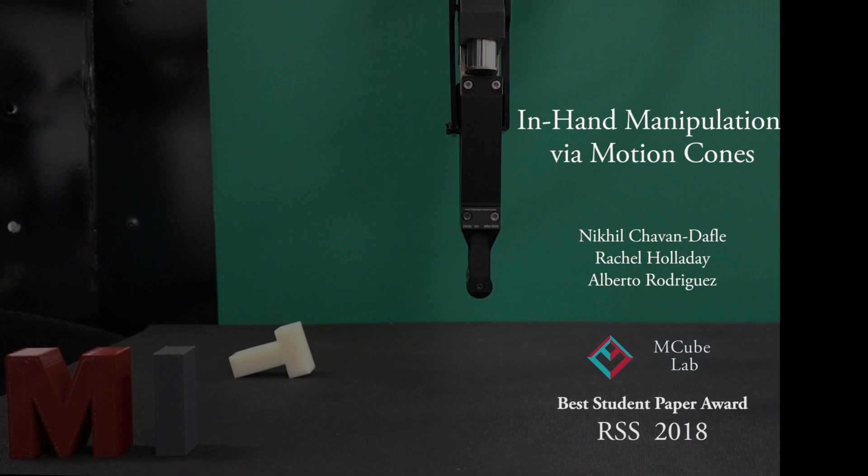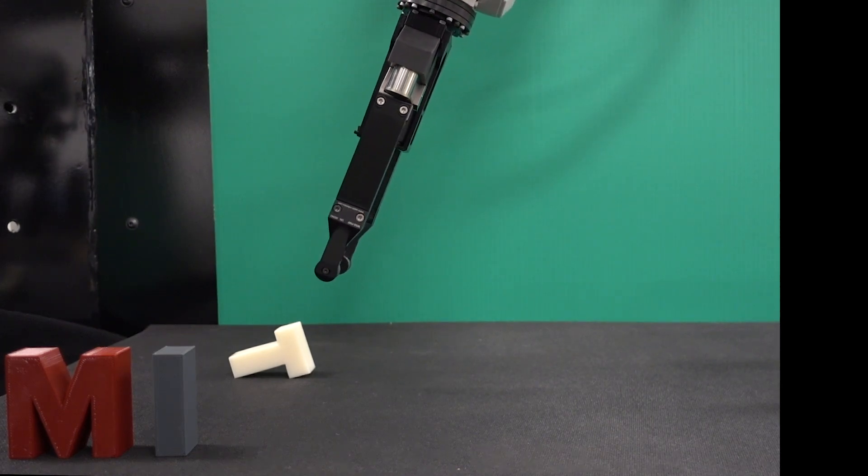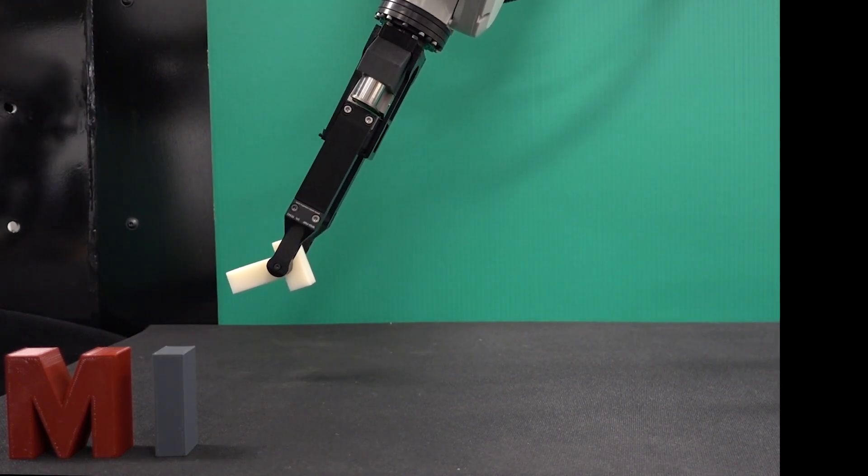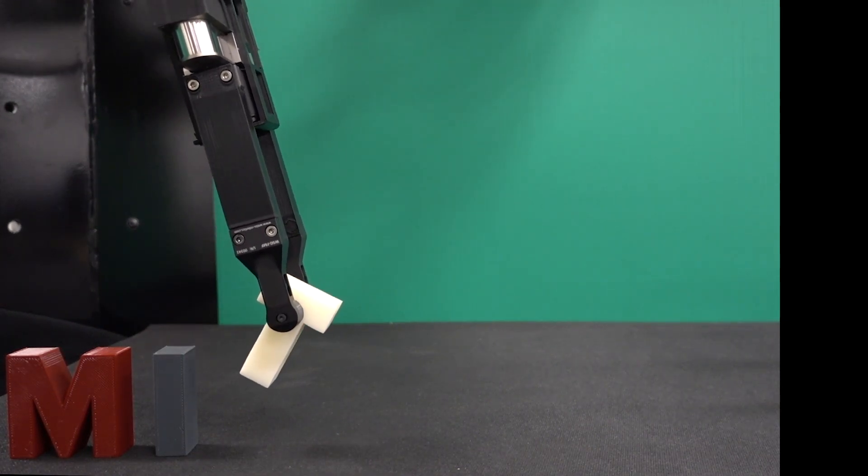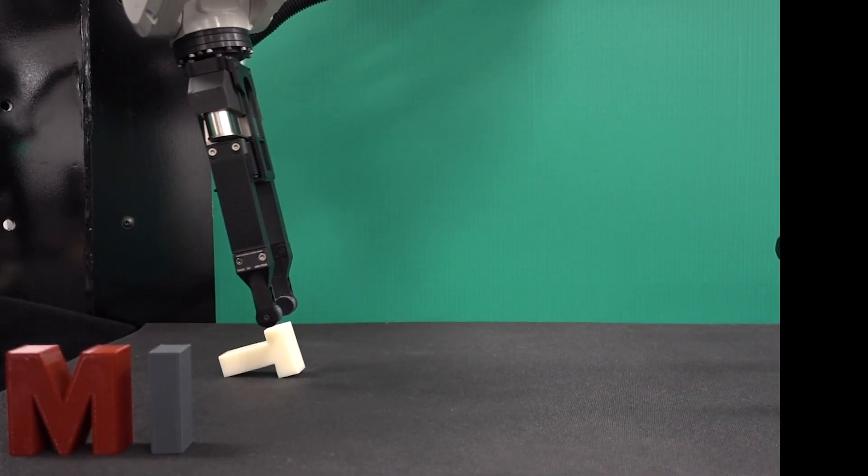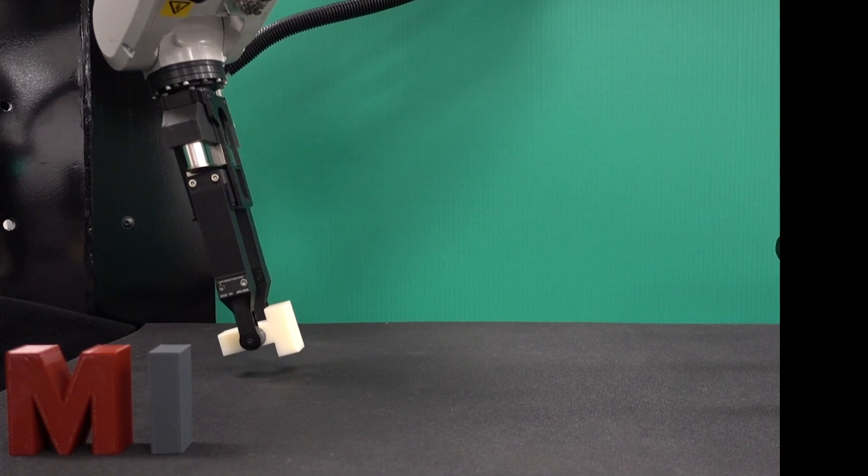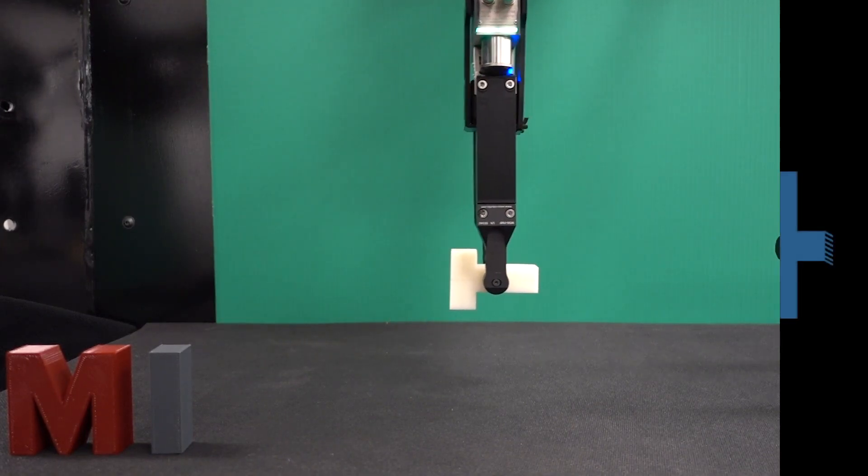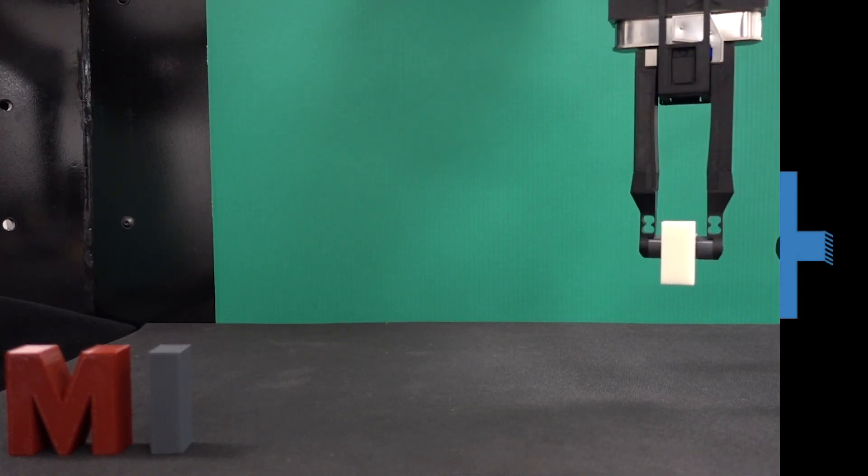In this paper we present an in-hand manipulation approach that exploits the reachability knowledge from the mechanics of pushing. It's not always possible to pick up an object in a pose that is immediately useful. We are interested in enabling robots, even those with simple grippers, to re-grasp an object in hand by pushing it against the environment.